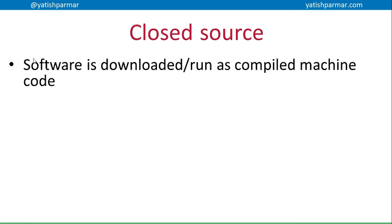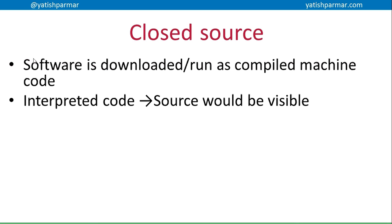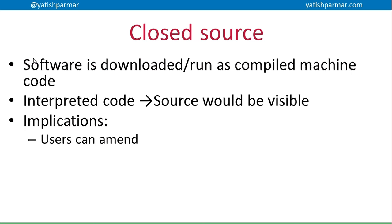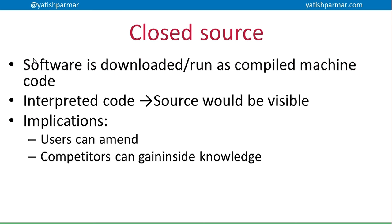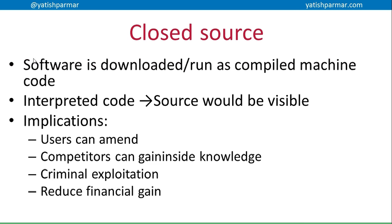Closed source software is probably what we're most familiar with, where software is downloaded as compiled machine code. That means when you possess the executable, you can't actually see the source code. The opposite would be interpreted code being translated as the program runs — in that case you would be able to see the source code. There are several implications: users can amend the source code, competitors can gain inside knowledge of how the application works, and the software is open to criminal exploitation.